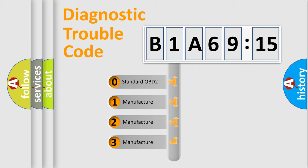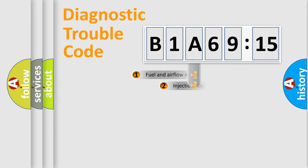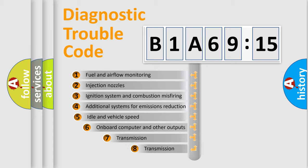If the second character is expressed as zero, it is a standardized error. In the case of numbers 1, 2, 3, it is a manufacturer-specific error code.